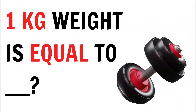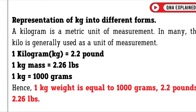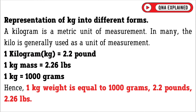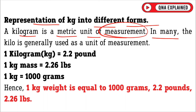1 kg weight is equal to — representation of kg into different forms. A kg is a metric unit of measurement. In many contexts, the kg is generally used as a unit of measurement.